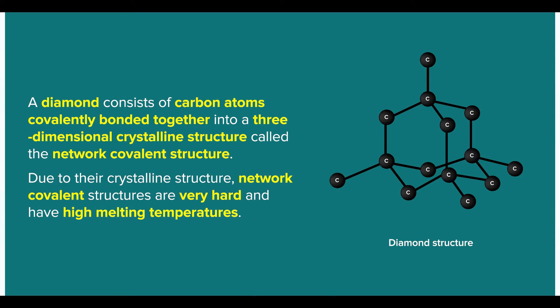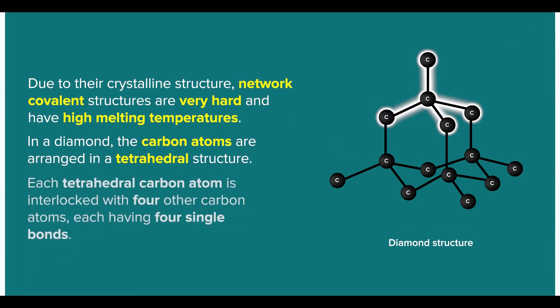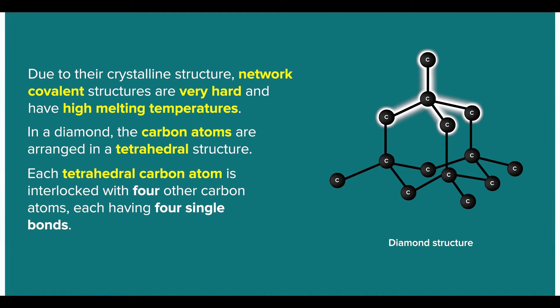Students often ask, what kind of network covalent structure a diamond has? Well, in a diamond, the carbon atoms are arranged in a tetrahedral structure. Each tetrahedral carbon atom is interlocked with four other carbon atoms, each having four single bonds.